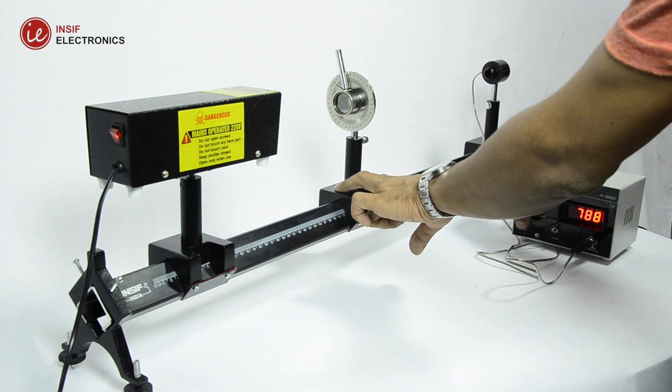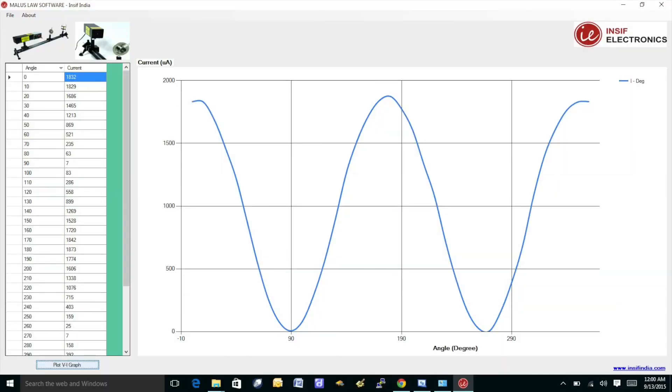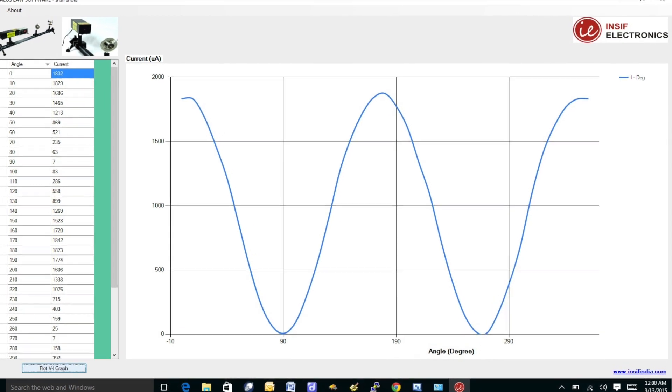As the software is provided with the experiment, insert the reading in the software and click plot graph. You will see the cosine square function.